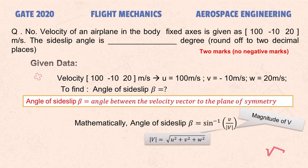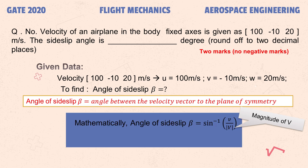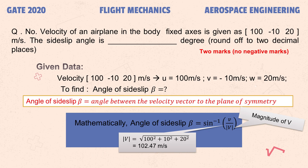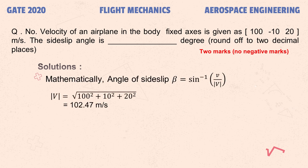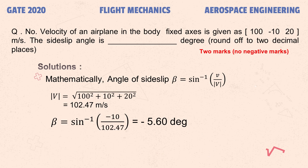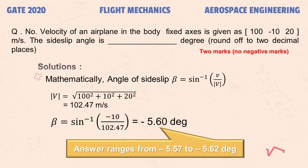Mathematically, beta equals sine inverse of v divided by the magnitude of V, where the magnitude of V equals the square root of u² + v² + w². Substituting: sqrt(100² + 10² + 20²) = 102.47 m/s. Therefore beta = sine inverse of (−10 / 102.47) = −5.60 degrees. Based on the answer key, the acceptable range is −5.57 to −5.62, which is within the proper limit. The negative sign is very important here.